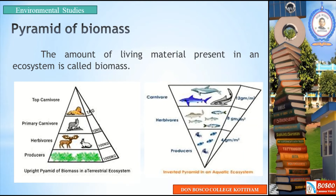Starting from producers, we look at the biomass going to the top — that is, primary and secondary consumers and decomposers have a smaller biomass. In an aquatic ecosystem, however, there is an inverted pyramid of biomass, where producers have less biomass than consumers.